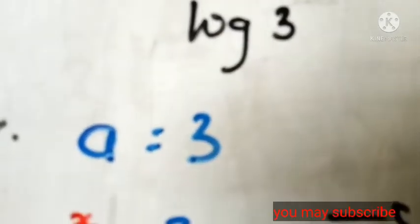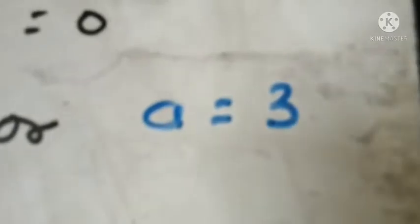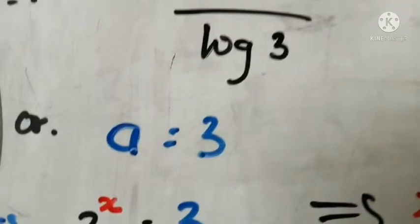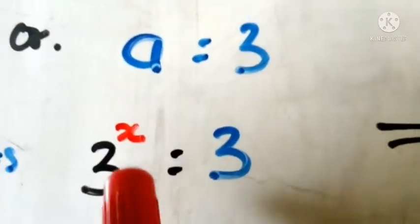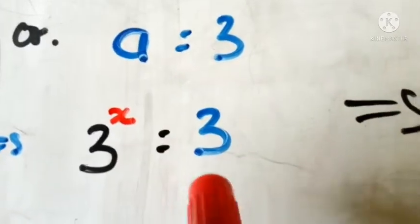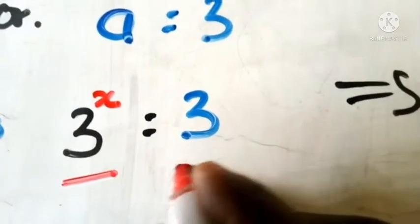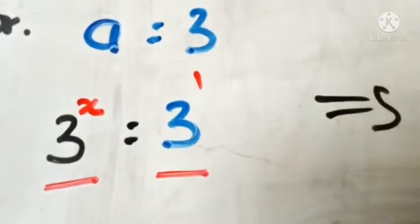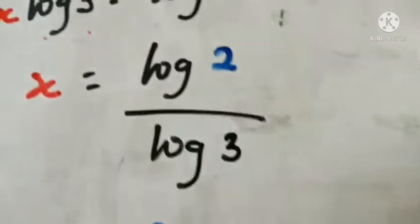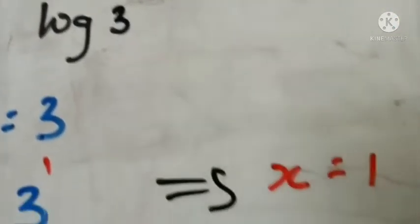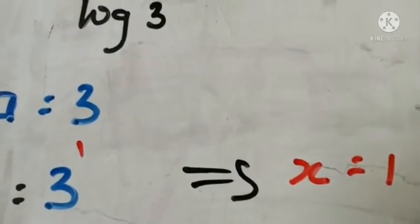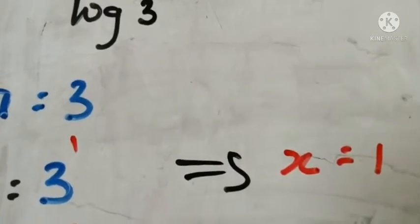Remember that in quadratic you get two answers. That was the first one. The second one: we had a equals 3, and since a was 3^x, we have 3^x equals 3. Since the bases are the same, we can just equate the exponents — meaning x equals 1. So we have two answers for x: the first is log 2 divided by log 3, and the second is x equals 1. This is how nicely we solve this type of question.